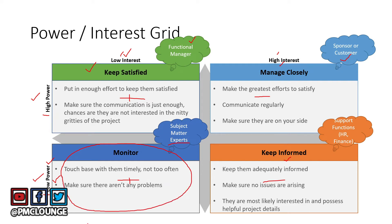So low power, low interest — this is the quadrant where suppliers would basically fall. What are you supposed to do with people who fall in this quadrant? You are supposed to monitor them, touch base with them, but not too often as they might not be interested. You need to make sure there aren't any problems. That is what you do for people who have low power and low interest in your project.